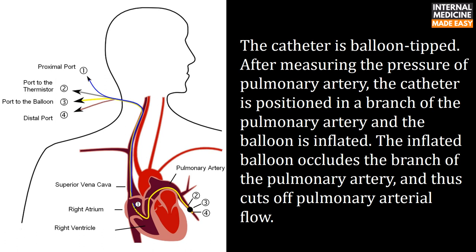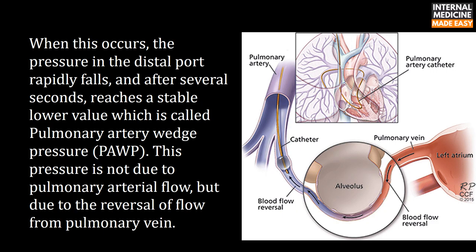The catheter is balloon-tipped. After measuring the pressure of the pulmonary artery, the catheter is positioned in a branch of the pulmonary artery and the balloon is inflated. The inflated balloon occludes the branch of the pulmonary artery and cuts off pulmonary arterial flow. When this occurs, the pressure in the distal port rapidly falls, and after several seconds reaches a stable lower value called pulmonary artery wedge pressure.